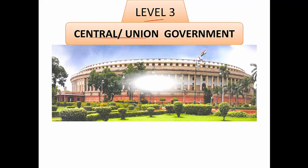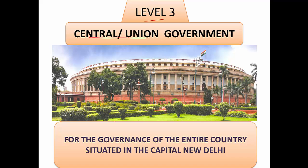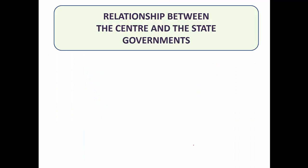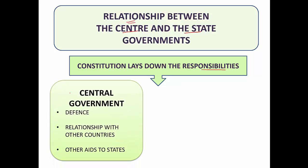Level three, the highest level, is the central or the Union Government. The Union Government functions from the Parliament House, situated at the capital of the country, which is New Delhi. The Constitution has laid down the responsibilities of the center and the state governments. The central government takes care of defense, relationships with other countries, and other aids to the states.